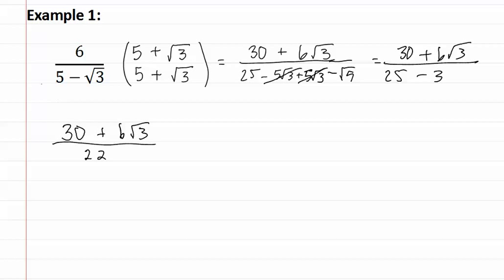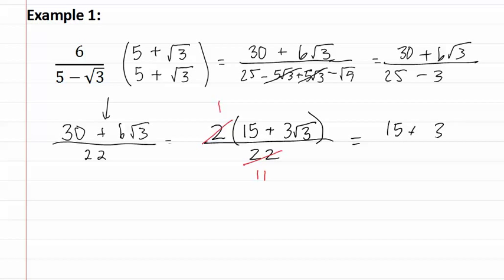Remember, you cannot simply just start crossing numbers out, because there is more than one term shown with the addition here. So first, we must factor out the things in common between the two terms in the numerator, which means let's factor out a two. This gives us fifteen plus three root three. As you can tell, I could have factored out an additional three for a total of six being factored out, but I know that six does not go into twenty-two. Now, let's reduce. Two goes into two once and into twenty-two eleven times. This gives us fifteen plus three root three over eleven, which cannot be simplified any further.